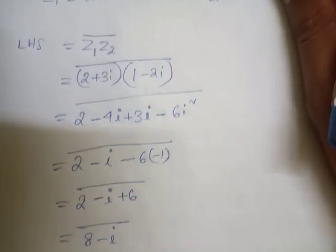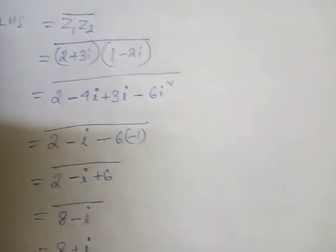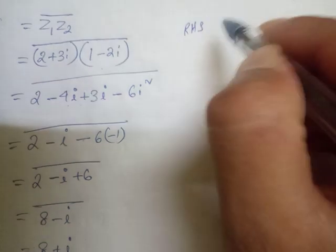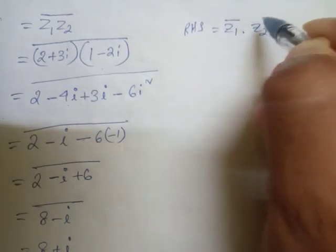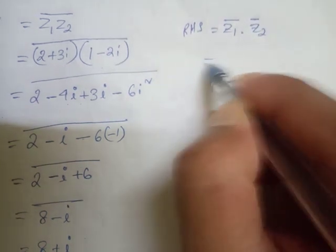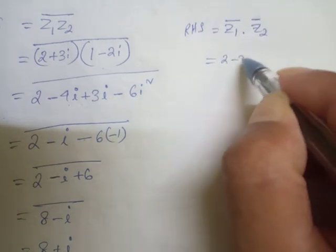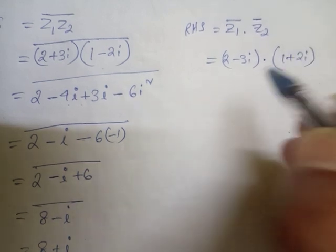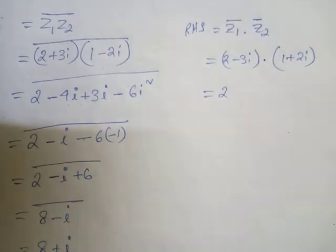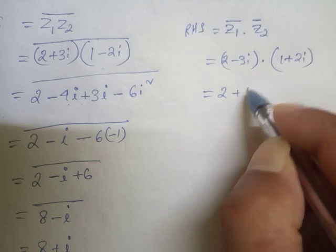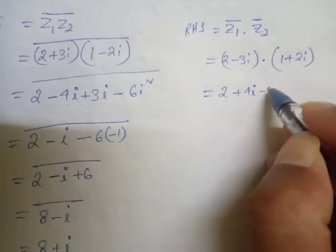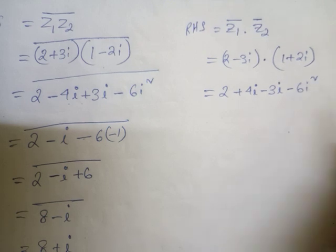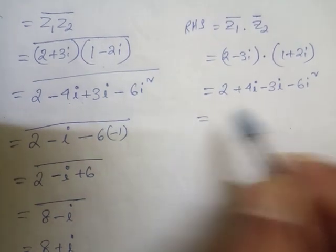Now think about the RHS. For RHS, we have z1 bar into z2 bar. Substituting: z1 bar = 2 - 3i and z2 bar = 1 + 2i. Go for the multiplication: 2 into 1 is 2, 2 into 2i is 4i, minus 3i into 1 is -3i, and -3i into 2i gives -6i squared.